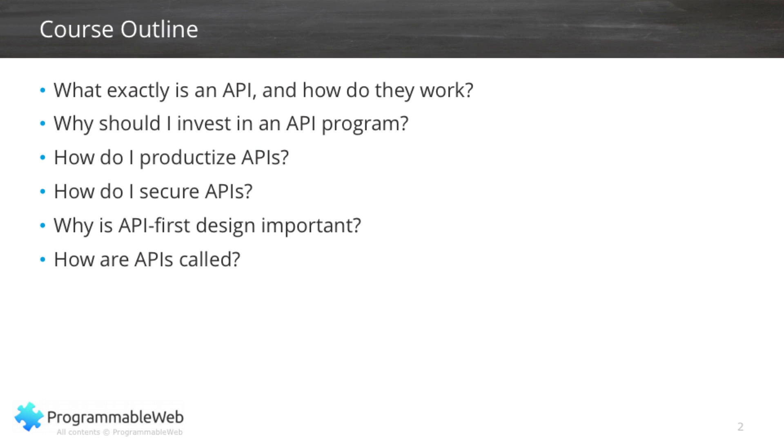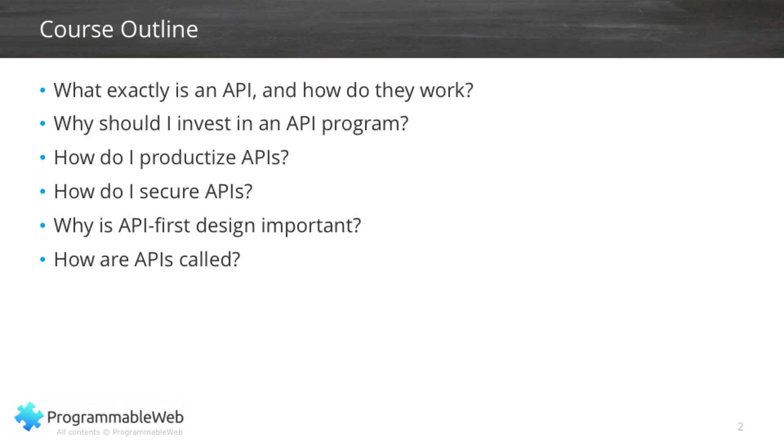Stay tuned for this series because it's going to be great. Broadly speaking, we're going to cover about six or seven topics. The first one is what exactly is an API and how do they work? Next, we're going to talk about why you should invest in an API program, whether you're a developer consuming APIs or an organization thinking about providing APIs so that developers can use them. Then we're going to talk about how to productize APIs — a very important issue because a lot of organizations don't treat their APIs as products. That's a mistake, and we're going to talk about why and how to treat them as products so that you get the best possible results.